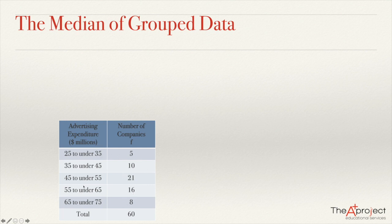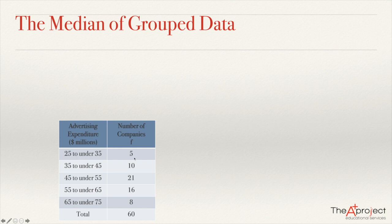We have the data organized in this way. We don't know exactly how much each of these five companies spends — we know that they are between 25 and 35, but we don't know exactly. For that reason, we cannot compute exactly what is the median. But at least we can get a way to estimate the median of data like this.